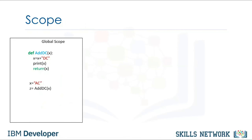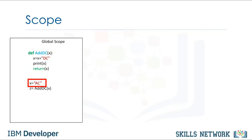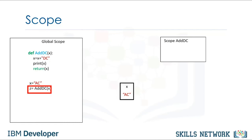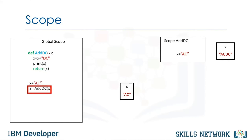The scope of a variable is the part of the program where that variable is accessible. Variables defined outside of any function are within the global scope, meaning they can be accessed anywhere after they are defined. Here we have a function that adds the string dc to the parameter x. When x is set to ac in the global scope, x is accessible anywhere after it is defined — this is called a global variable. When we call the function, we enter a new scope. Within the scope of the function, x is set to ac dc, and the function returns the value assigned to z.